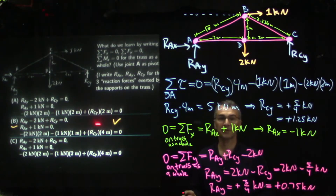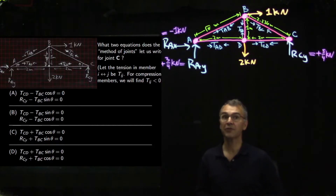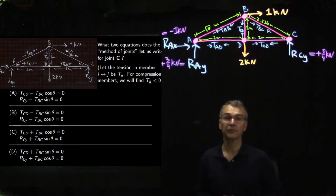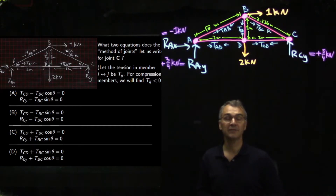Next, what two equations does the method of joints let us write down for joint C? You almost always want to pick a joint where there are at most two unknown forces. If you can pick one with only one unknown, so much the better — you'll get two equations from that joint and can resolve them right away rather than writing a big system to solve by substitution.